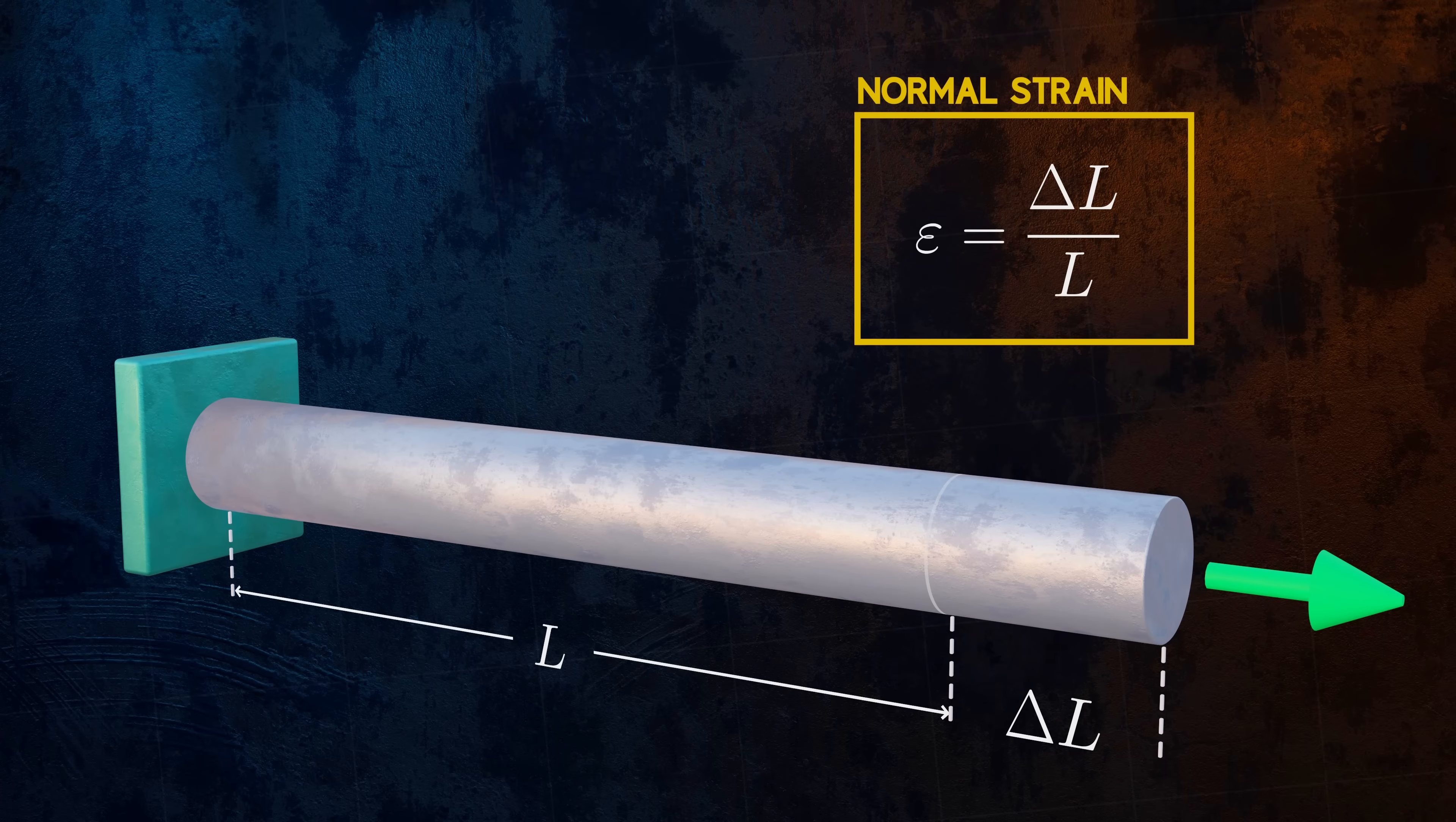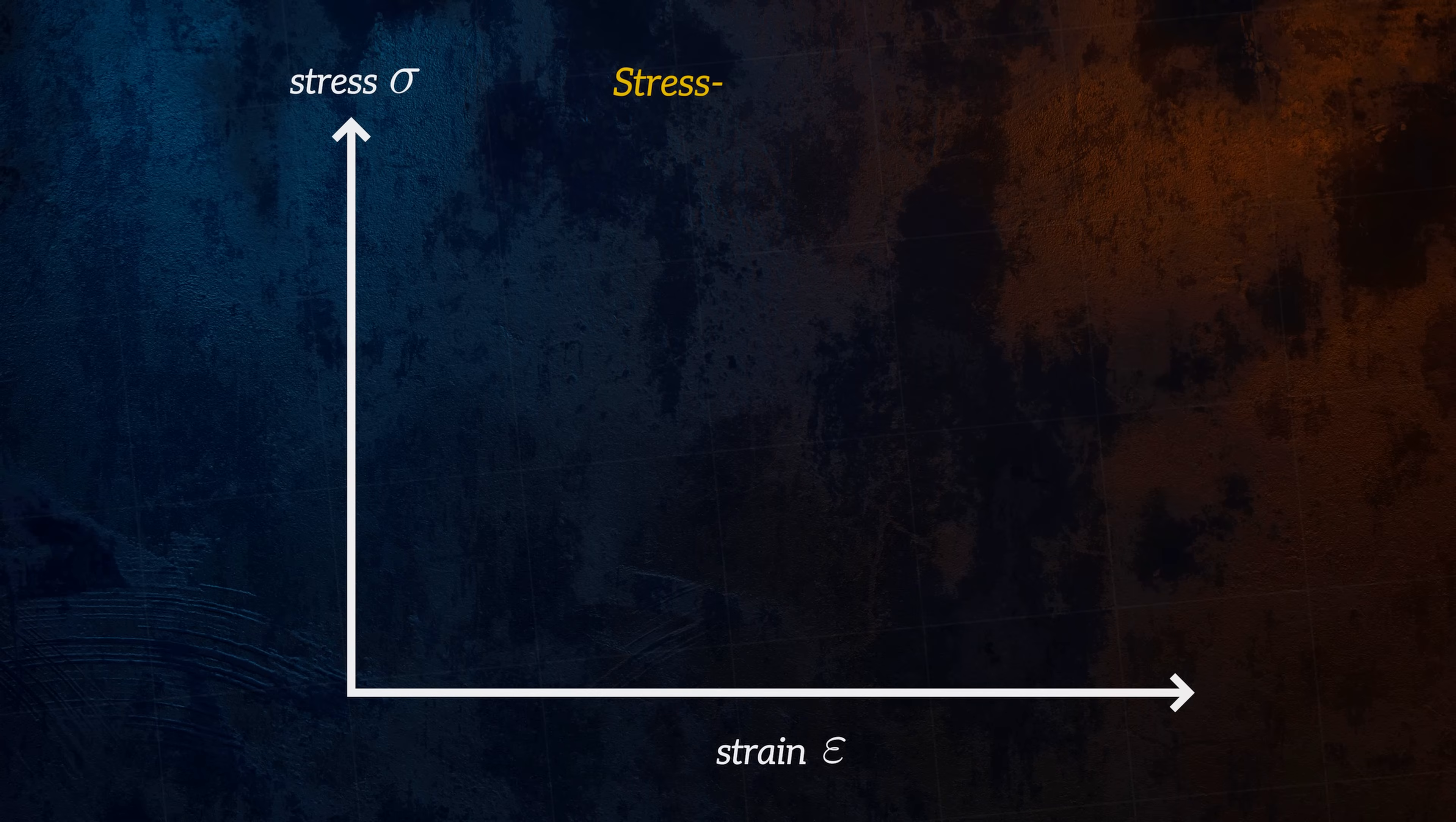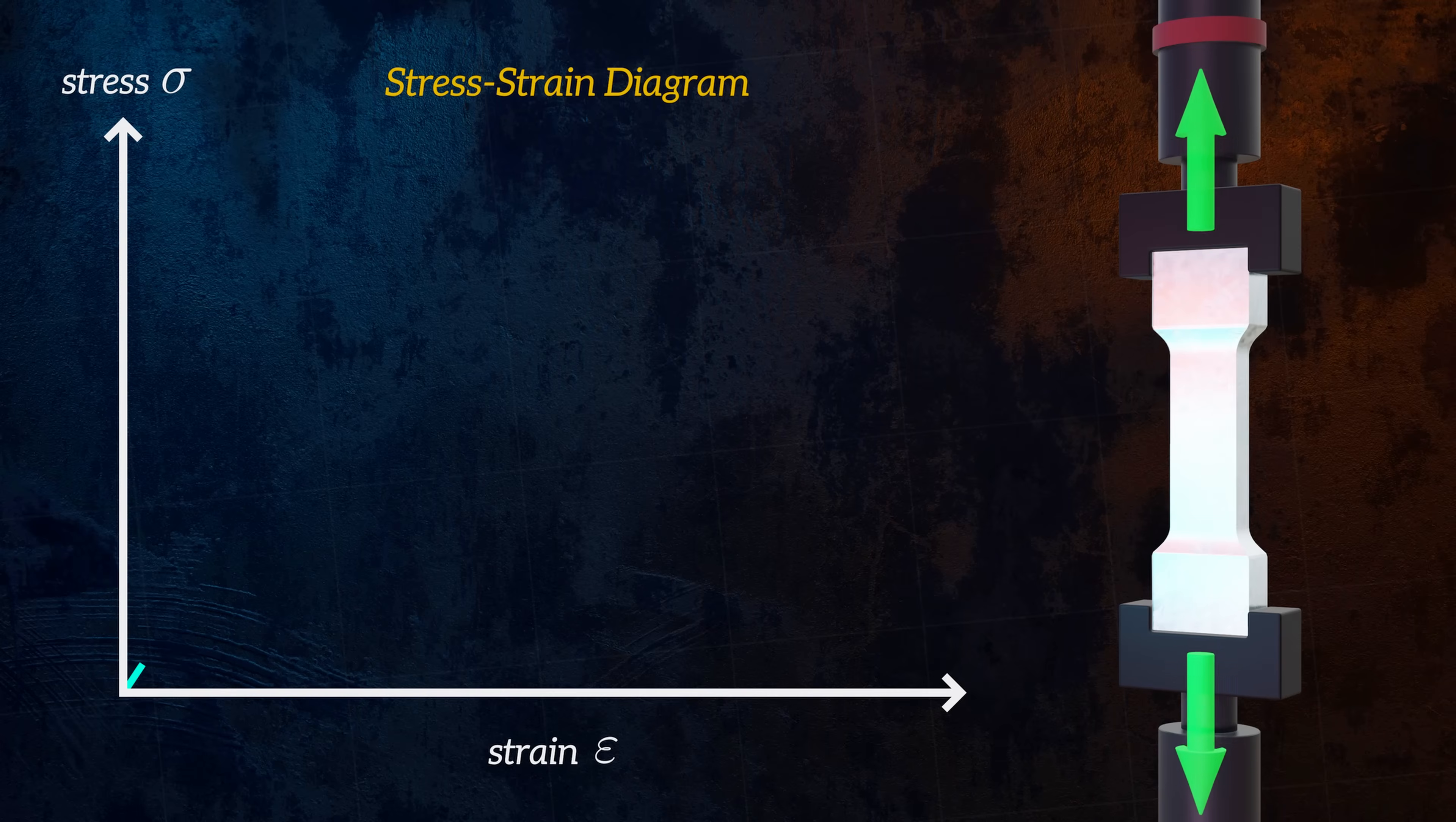I mentioned earlier that the concepts of stress and strain are closely linked. The relationship between the two can be described using a stress-strain diagram. Stress-strain diagrams are different for different materials. We can obtain the diagram for a specific material by performing a tensile test. This involves applying a known force to a test piece and measuring the stress and strain in the test piece as the applied force is increased.